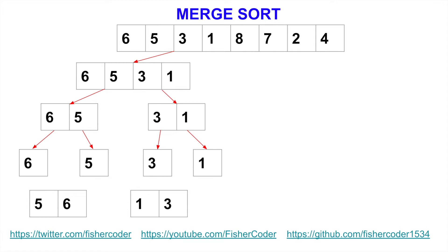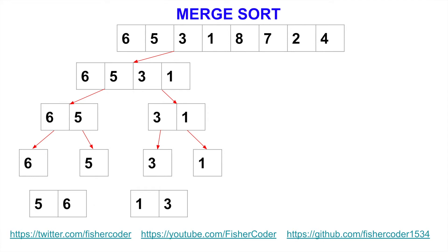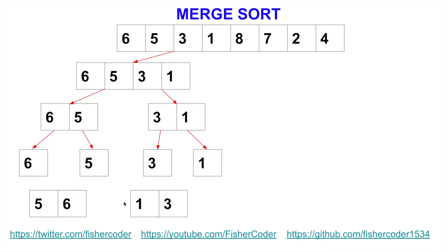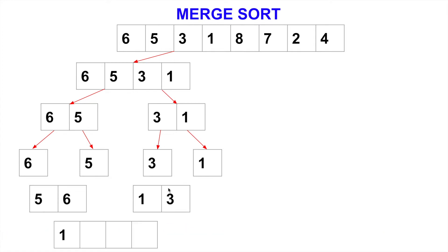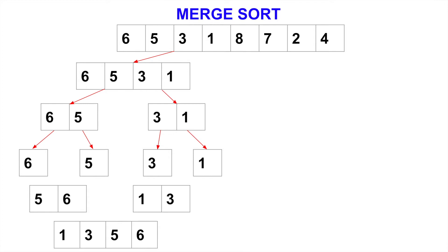We need to merge these sorted subarrays. It will be a lot easier because every individual subarray has already been sorted. So every time we only need to check the front element of each sorted subarray. We can easily merge these two sorted arrays by always comparing the two front elements. So we take 1 — 1 is smaller than 5. Then 3 becomes the front element; 3 is still smaller than 5, so 3 comes here. Then we simply copy everything from the first subarray — 5 and 6 — into the merged subarray. So we have a merged subarray for the first half.